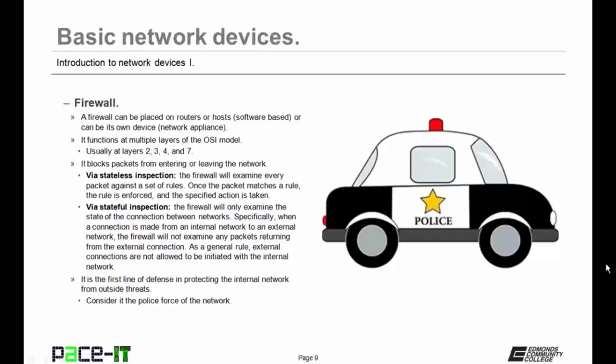As a general rule, external connections are not allowed to be initiated with the internal network. A firewall that uses stateful inspection will only allow connections to be made from inside to outside — it will not allow that outside entity to initiate a connection with an inside host. Firewalls are usually the first line of defense in protecting the internal network from outside threats. You can consider the firewall as the police force of the network.